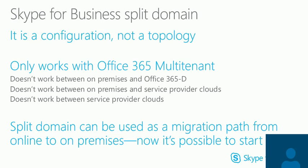It's a split domain concept. If you have a domain called contoso.com, you can go ahead and split that. It only works with Office 365 multi-tenant — it's mandatory that you have an Office 365 tenant, otherwise your hybrid deployment will not work. Your on-premise and Office 365 deployments have to work together, and you are splitting the SIP domain between the on-premise and the online world.